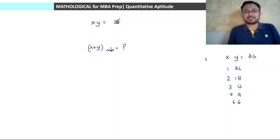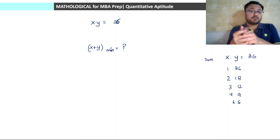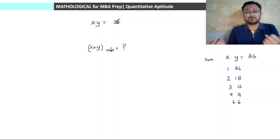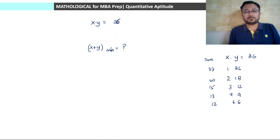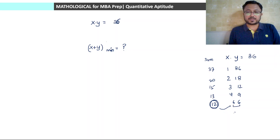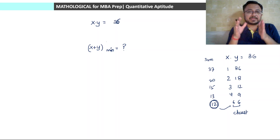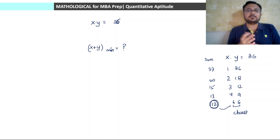Let us also look at the sum in each case. When the numbers are farthest apart, the sum is maximum — that is 37. Then 20, 15, 13, and 12. So the sum is minimum when the numbers are equal; in this case when x and y are both 6.